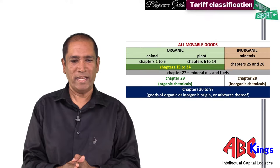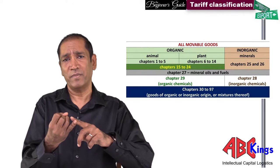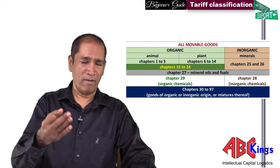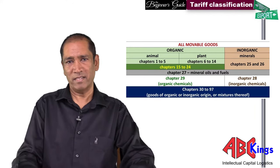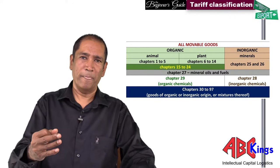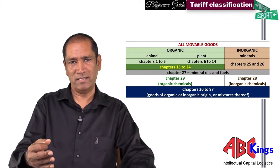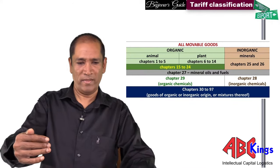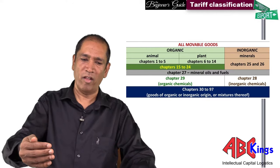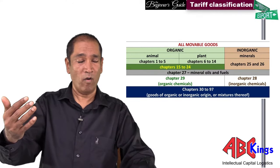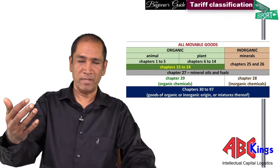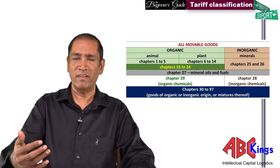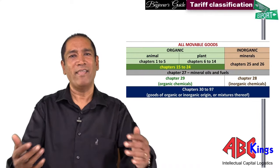Chapter 31 is fertilizers — from plant, animal, or chemicals under the earth. Chapter 32 is dyes and paints. Chapter 33 is essential oils and cosmetics. Chapter 34 is soaps and washing preparations. Chapter 35 is starches and glues. Chapter 36 is explosives. Chapter 37 is photographic materials. Chapter 38 is other chemicals. Chapter 39 is plastics. Chapter 40 is rubber. Chapter 41 is skins and leather. Chapter 42 is leather articles. Chapter 43 is fur. Chapter 44 is wood. Chapter 45 is cork.